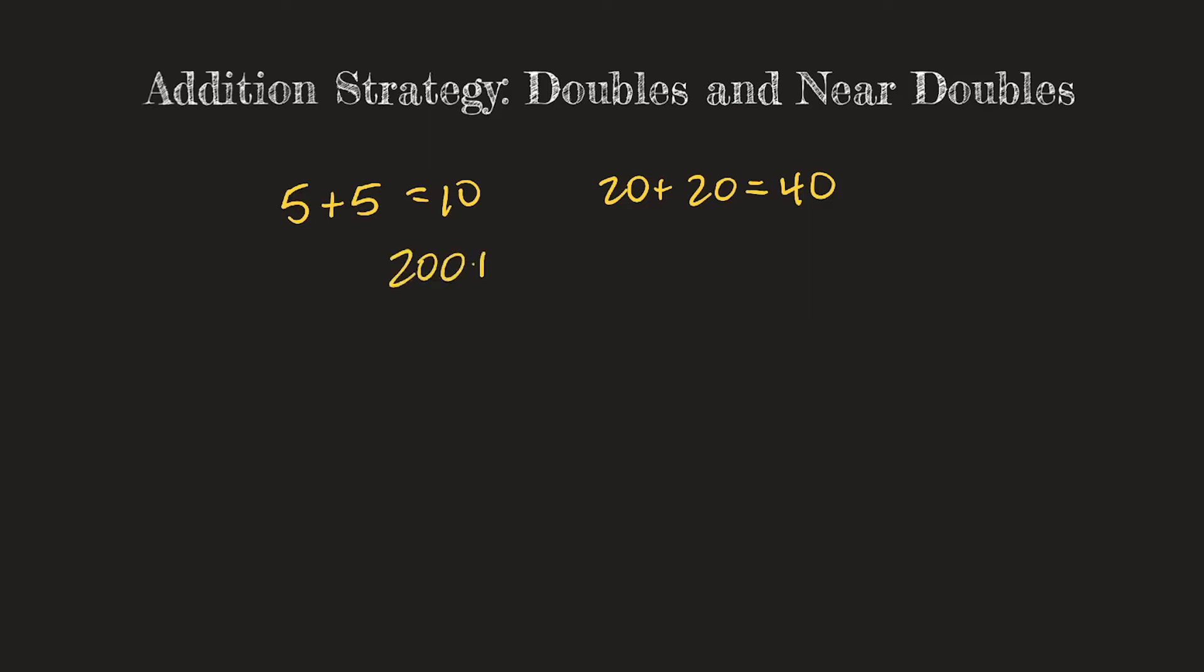So if I said 200 plus 200, you automatically know it's 400. It's just something that our brain can handle.